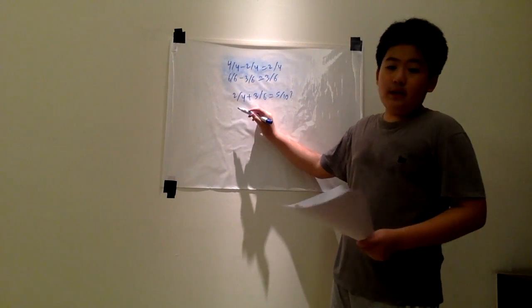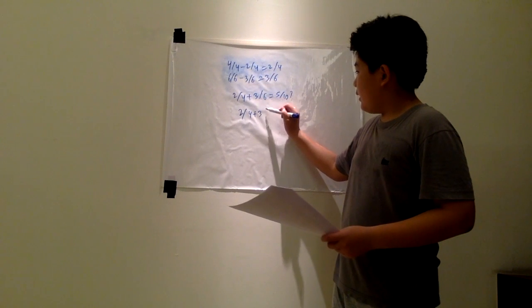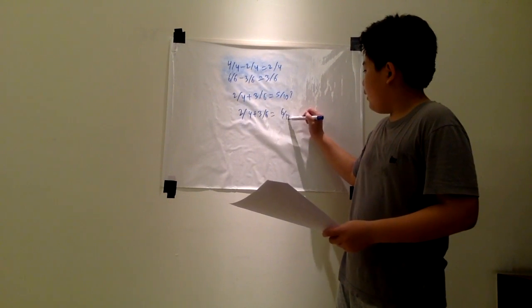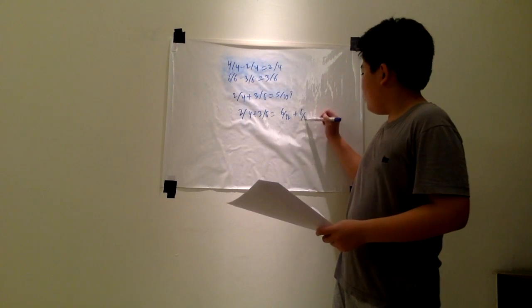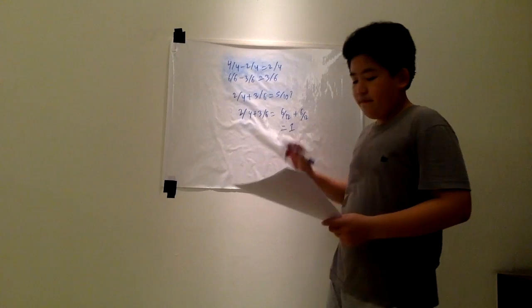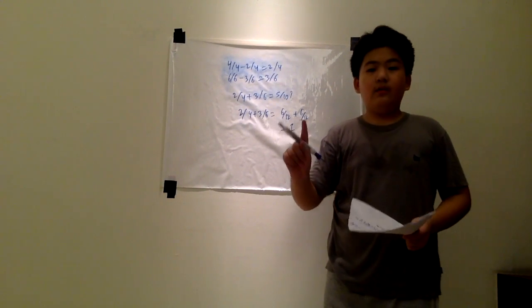So the real equation is two out of four plus three out of six equals six out of twelve plus six out of twelve. And the answer would be one. So all the pizzas combined would be one whole.